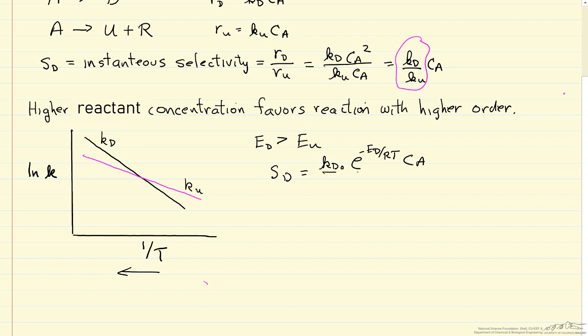Concentration of A divided by a pre-exponential factor for the undesired reaction, and then an exponential term with the activation energy for the undesired reaction.